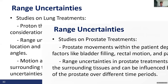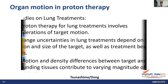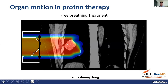For lung treatment, proton therapy involves considerations of target motion. Range uncertainties depend on the location and size of the target and the treatment beam angle. Motion and density differences between target and surrounding tissue contribute to varying magnitudes of range uncertainty. Depending on the breathing pattern, the range can change significantly, impacting dose distribution — as demonstrated in an example showing significant range variation with breathing.